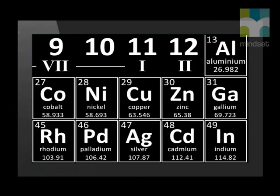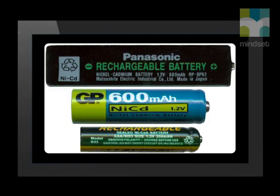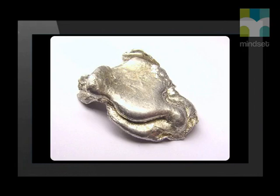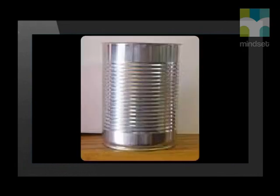Next to silver is another important element — cadmium. Its symbol is capital C, lowercase d, and its atomic number is 48. Cadmium is a silver-bluish metal and it is used in rechargeable batteries. The next element we need to know is tin. It has the symbol capital S, lowercase n, from the Latin stanum. Tin has atomic number 50 and is found under germanium. Because tin does not corrode easily it is used to plate metals such as food cans so that goods can be stored for a long time.